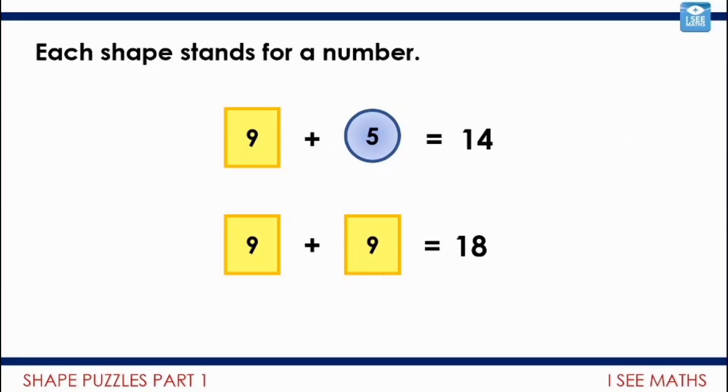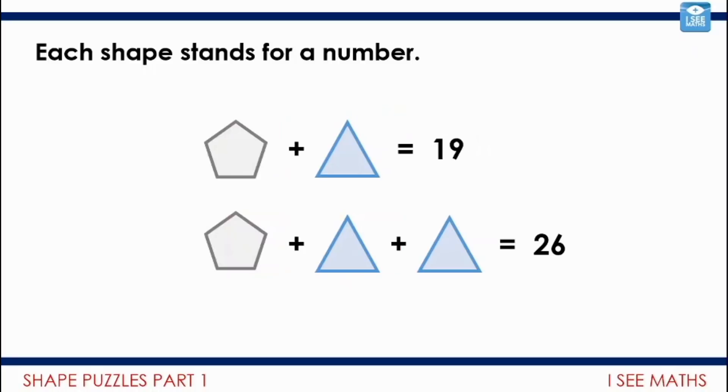Here's the next one. Have a look at these examples. The first line: the pentagon plus the triangle equals 19. Then the second line: a pentagon plus two triangles equals 26. Pause the video and either see if you can work out the value of each shape, or maybe just what stays the same and what's different between those two number sentences.